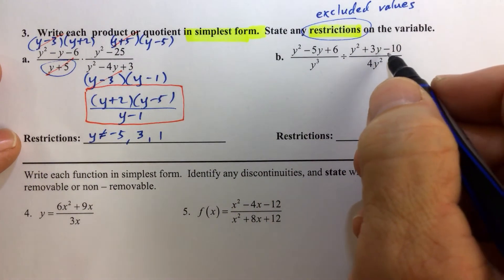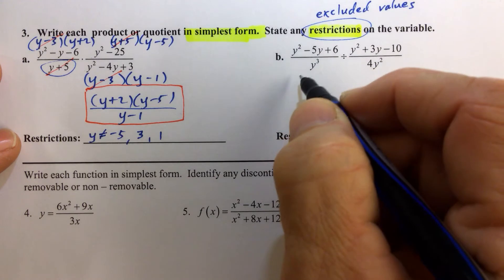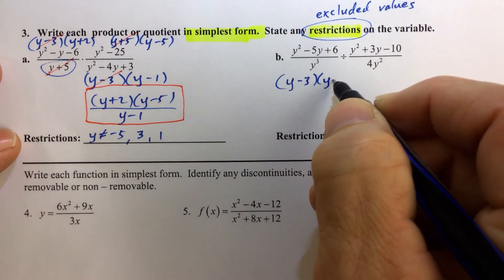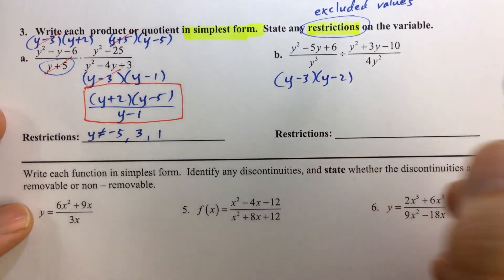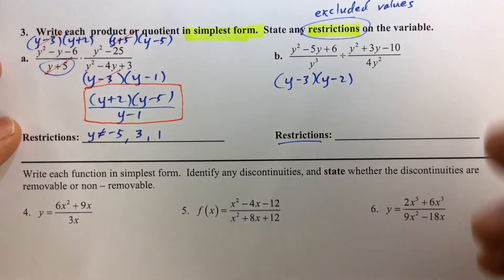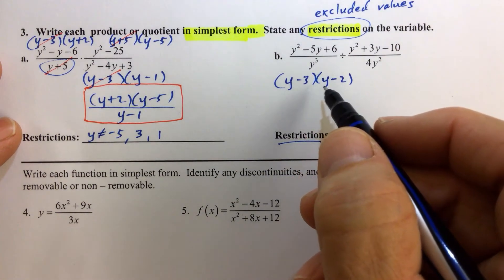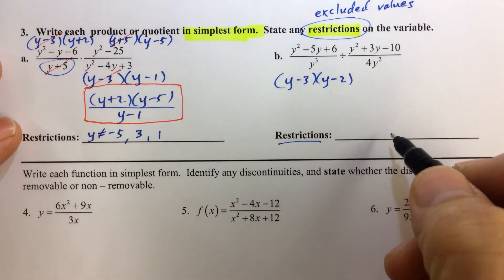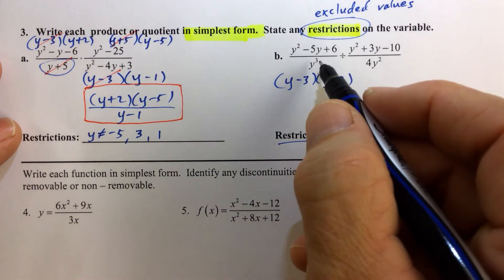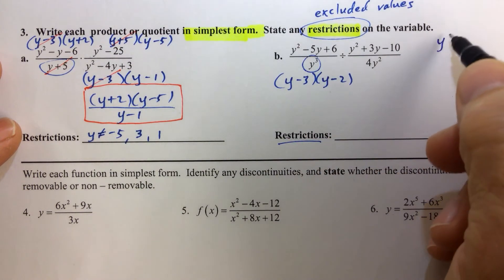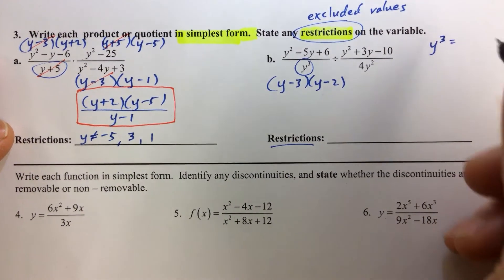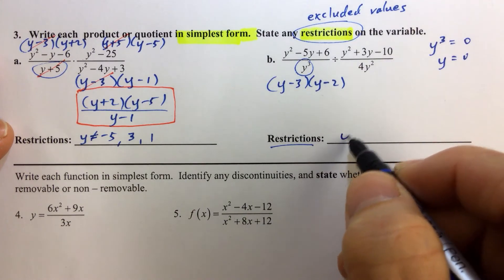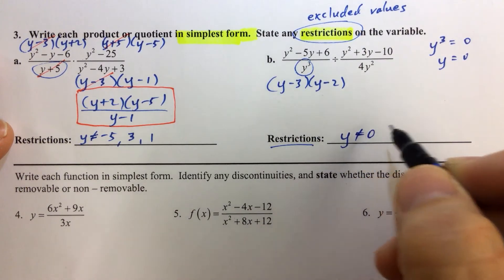In the second problem here, we're going to rewrite the numerator factored. Factoring the numerator, we have y minus 3 times y minus 2. Now let me not get hasty here. I want to identify the restrictions first, because sometimes after I simplify an expression, I forget to write down the restrictions. Restrictions occur when the denominator factors are equal to 0. If y cubed equals 0, that would only occur when y equals 0, so the restriction is y is not allowed to equal 0.